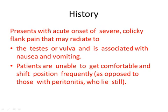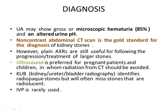History. Patients present with acute onset of severe colicky flank pain that may radiate to the testis or vulva, and is associated with nausea and vomiting. Patients are unable to get comfortable and shift position frequently, as opposed to those with peritonitis who lie still.